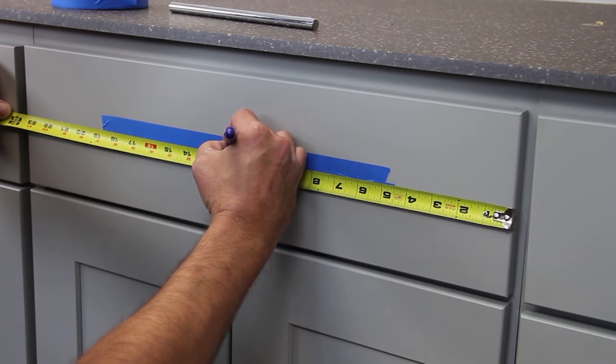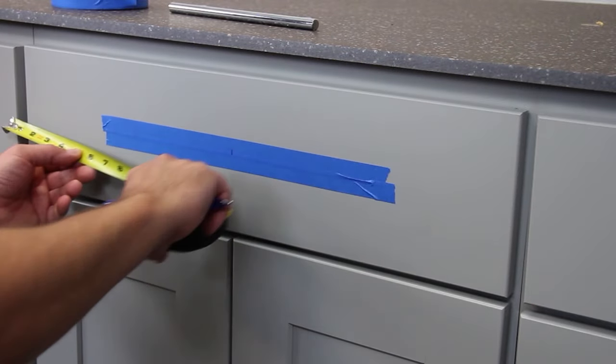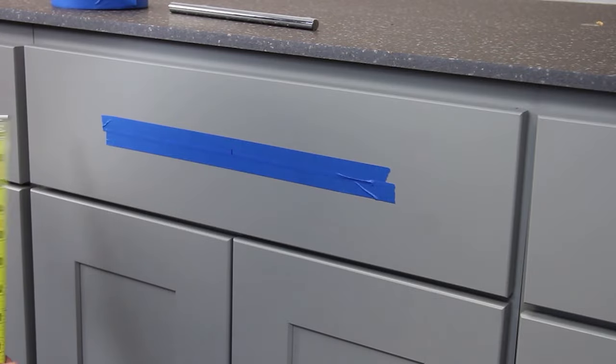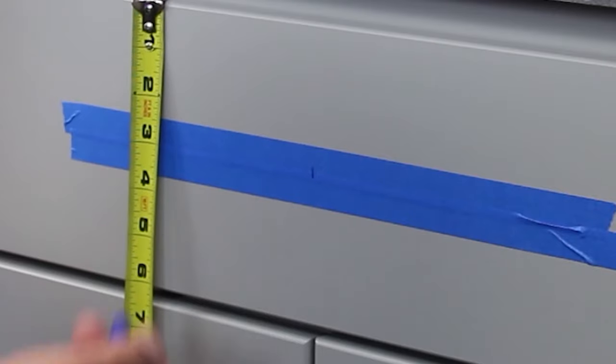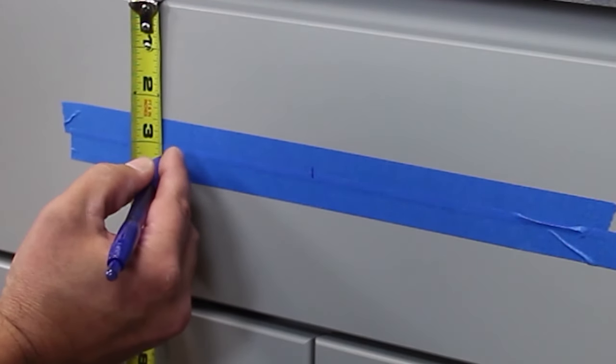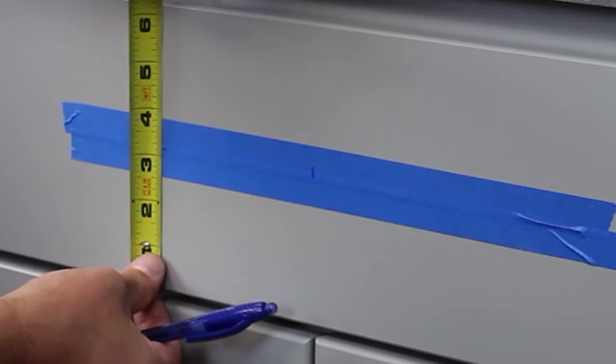Now I'm going to flip it over just to double check my measurement and yep it is 11 and three quarter. You can also use a calculator for this if you need to. So now we're going to figure out our height of our drawer front which is six and one quarter. Half of that is going to be three and one eighth and then we'll double check that again on the other side.